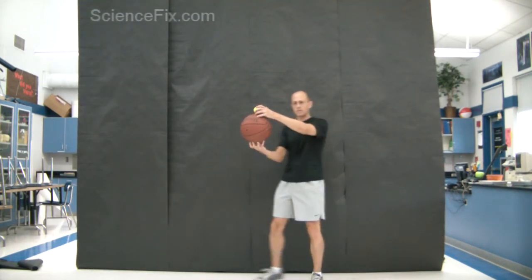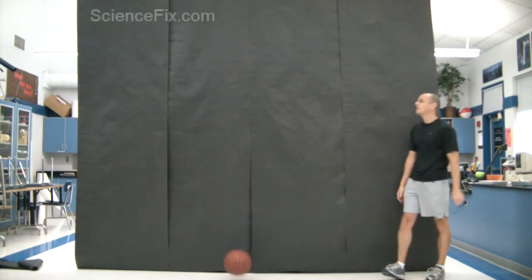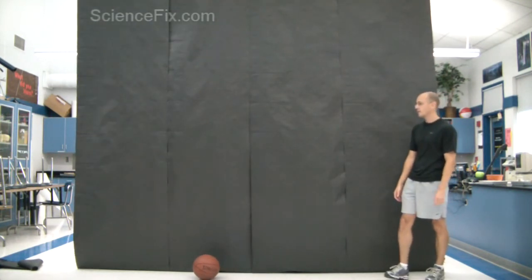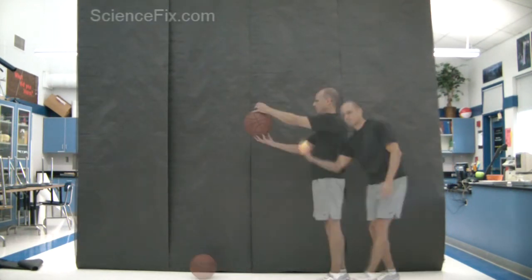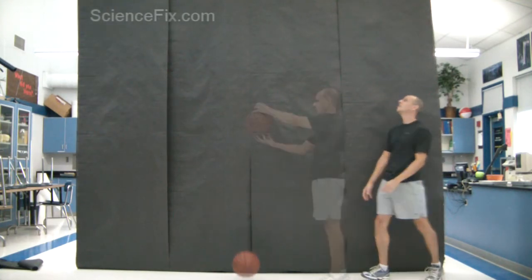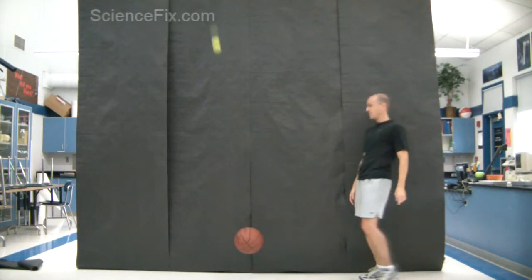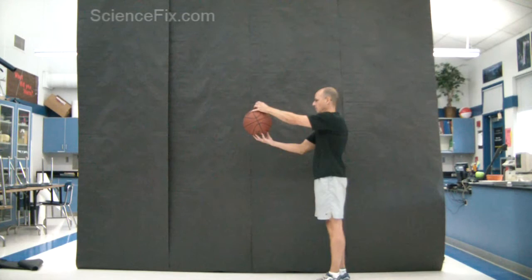The tennis ball is placed on top of the basketball and both of them are let go. This is a case where the force of the basketball going up is added to the force of the tennis ball going up, and the forces are added together creating a greater force that pushes the tennis ball to a much higher height.